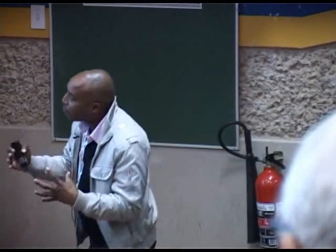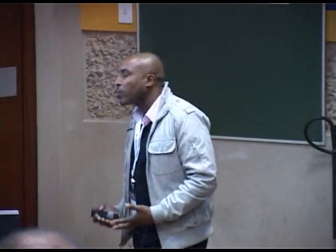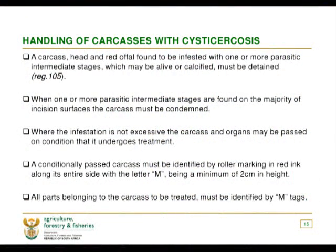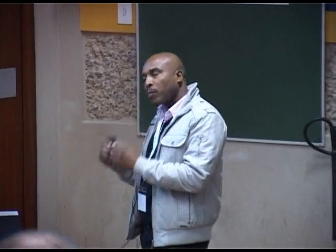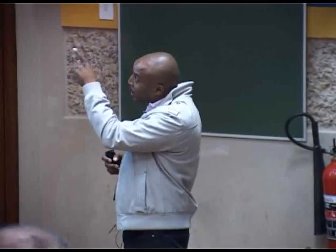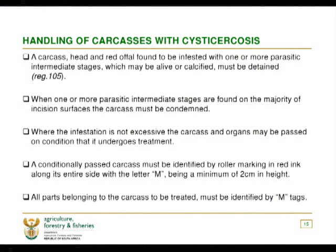Getting to the fundamental part: should cysticercosis be found in an abattoir, a carcass, head, and red offal found to be infested with one or more parasitic intermediate stages — whether alive or calcified — must be detained. When one or more parasitic intermediate stages are found on the majority of incision surfaces, the carcass must be condemned. People sometimes cannot assess this correctly and think it must be passed — it must be condemned at that level. Where the infestation is not excessive, the carcass and organ may be passed conditionally, provided it undergoes treatment.